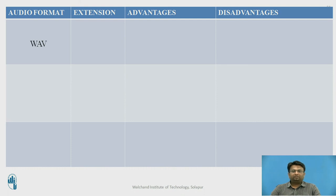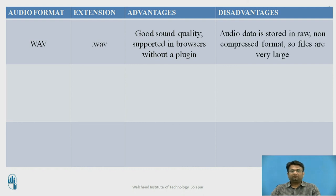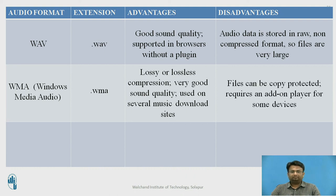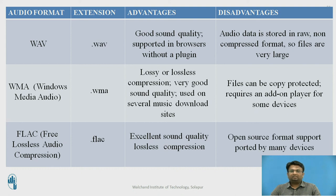WAV format, with extension .wav, provides good sound quality and is supported in browsers without a plugin, but audio data is stored in raw format so it needs very large storage space. WMA (Windows Media Audio), with extension .wma, provides lossy or lossless compression and very good sound quality, generally used for music download sites, but files can be copy-protected and require an add-on player for some devices. FLAC (Free Lossless Audio Compression), with extension .flac, offers excellent sound quality with lossless compression, but as an open-source format it is not supported by many devices.